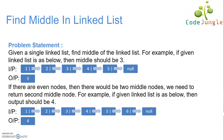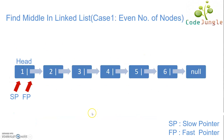Moving to the first scenario where the number of nodes is even: given the linked list, we take two pointers — a slow pointer and a fast pointer — both initially pointing to the head node. We will iterate the linked list and in each iteration check the condition: fast pointer should not be null and fast pointer's next node should not be null.